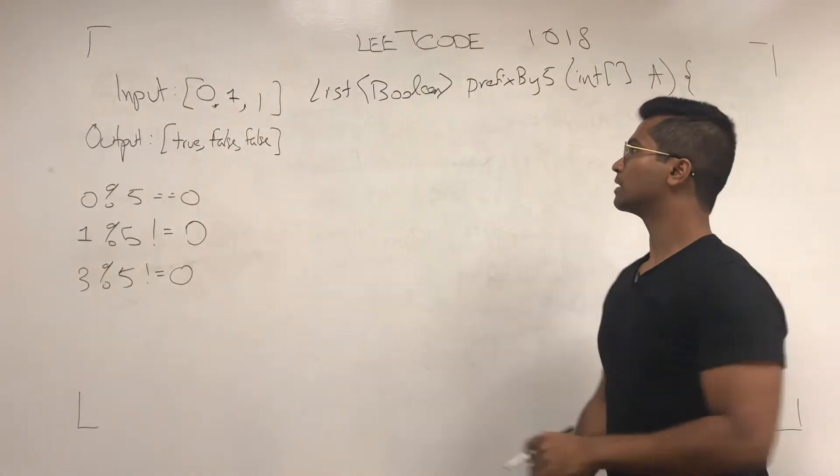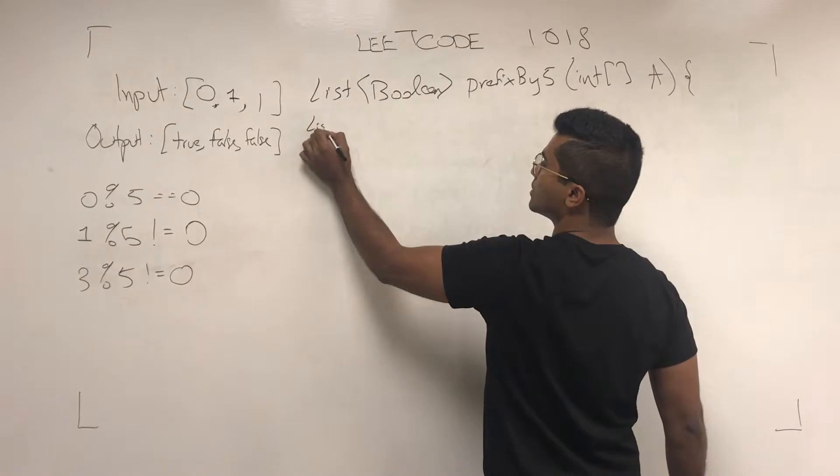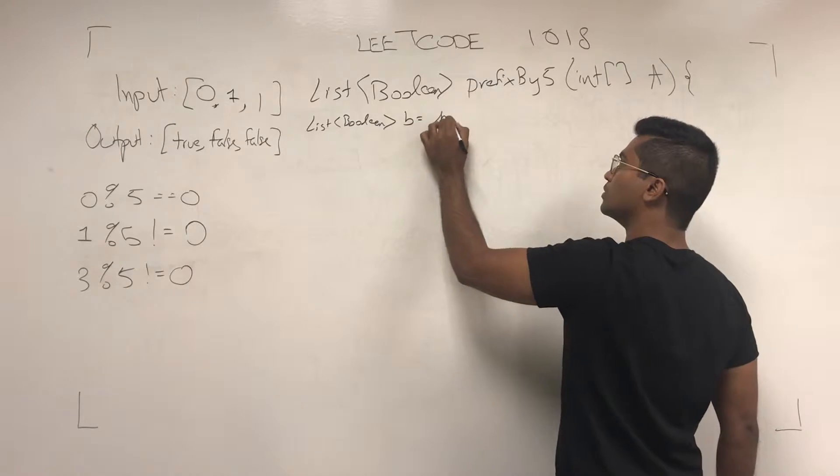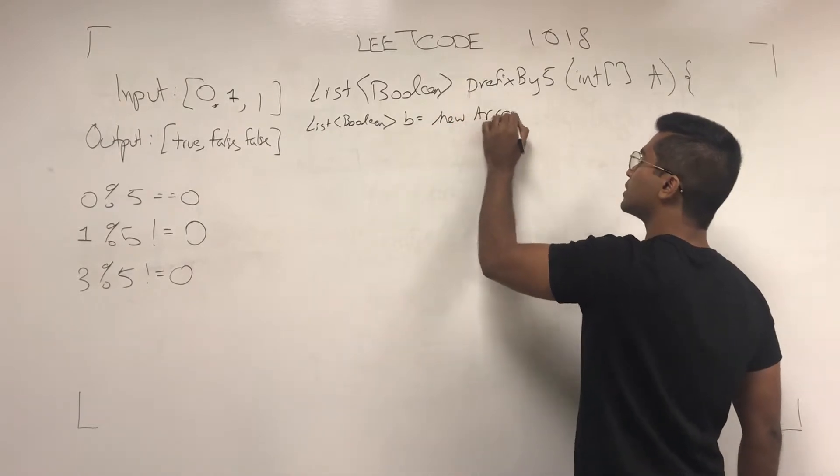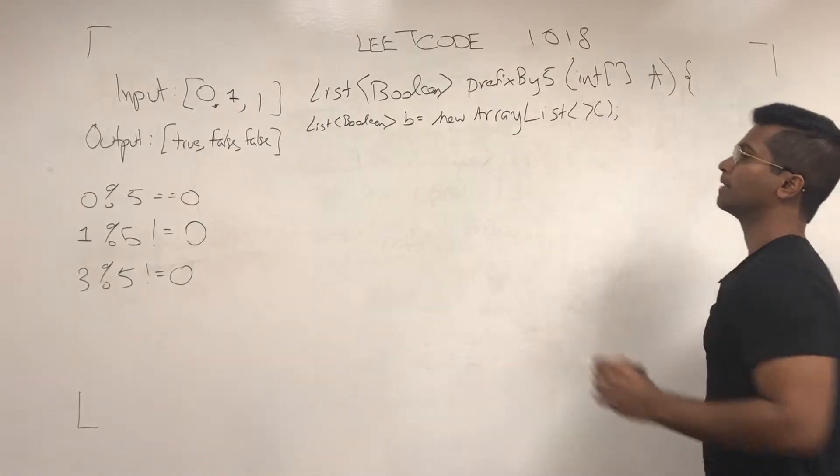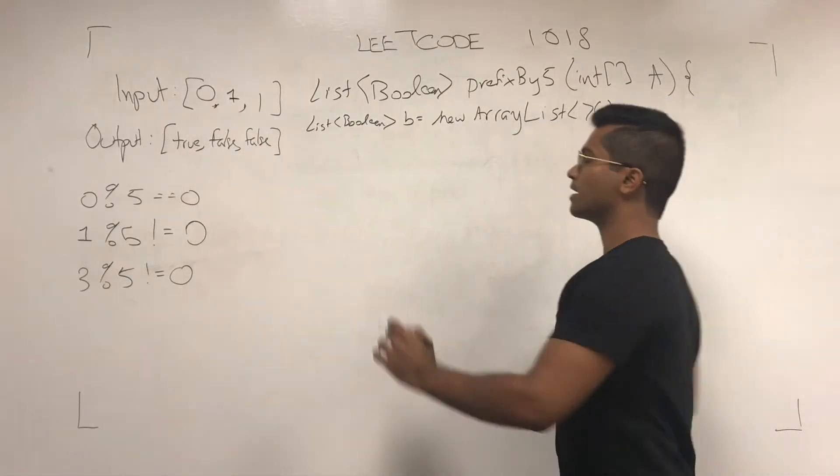Okay, so first let's create a list of boolean. I'll call it B equals new ArrayList, and we'll take the first element. Let's add it.